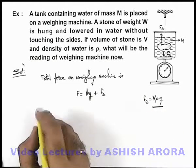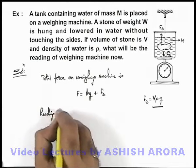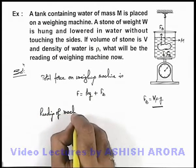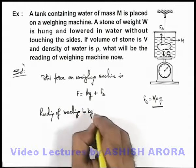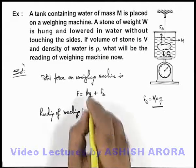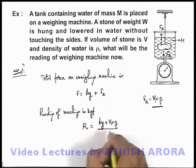So in this situation we can directly write down the reading of weighing machine, which can be written as reading of machine in kilogram force, given as R, which is equal to Mg plus Vρg divided by g.